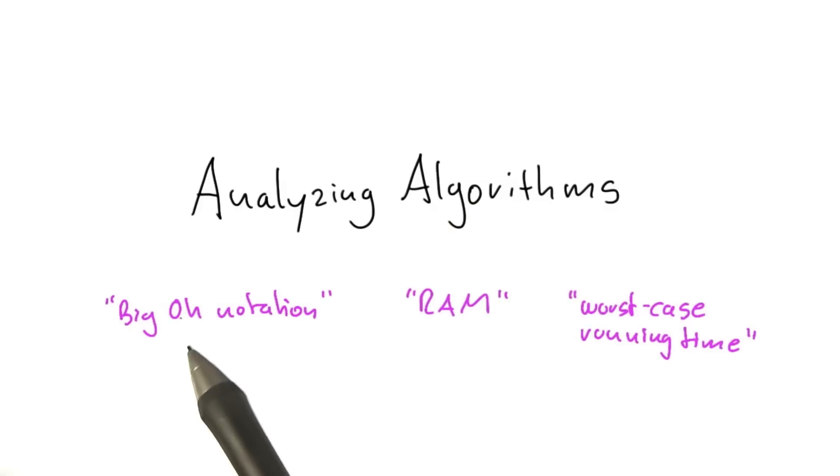If you've already had an algorithms course before and terms like big O notation or RAM or a worst-case running time are already meaningful to you, then you might try and go directly for the quizzes for the respective sections.